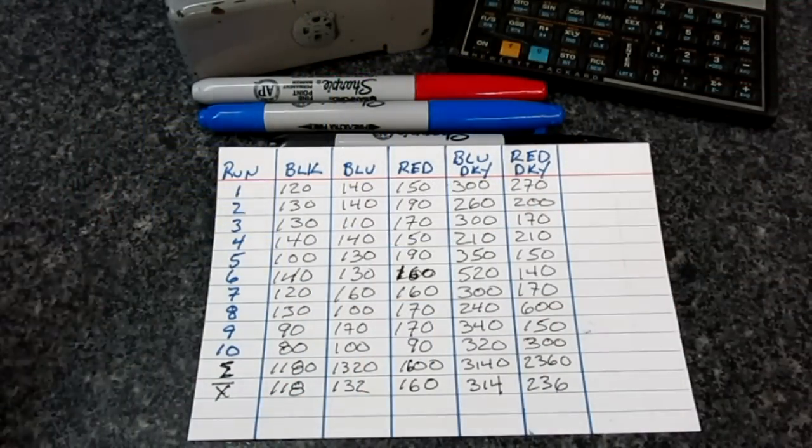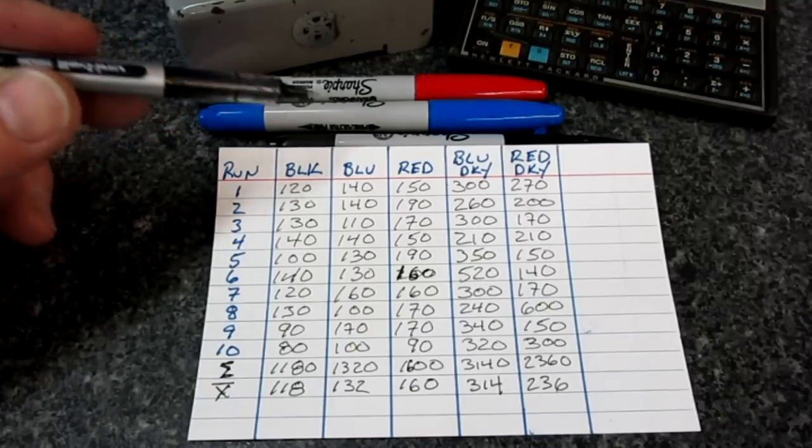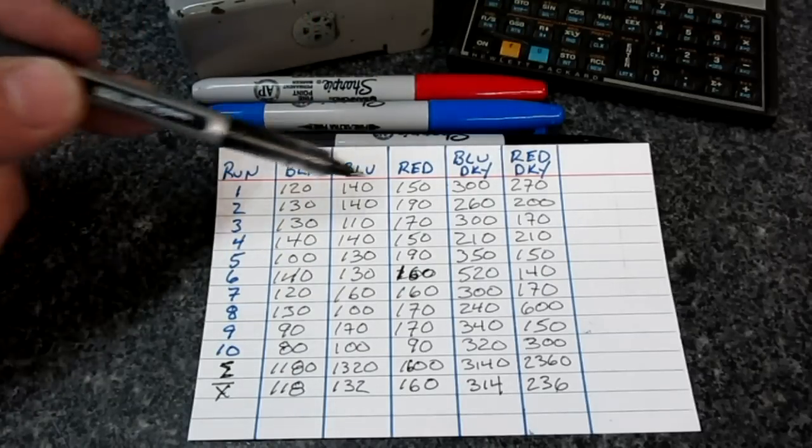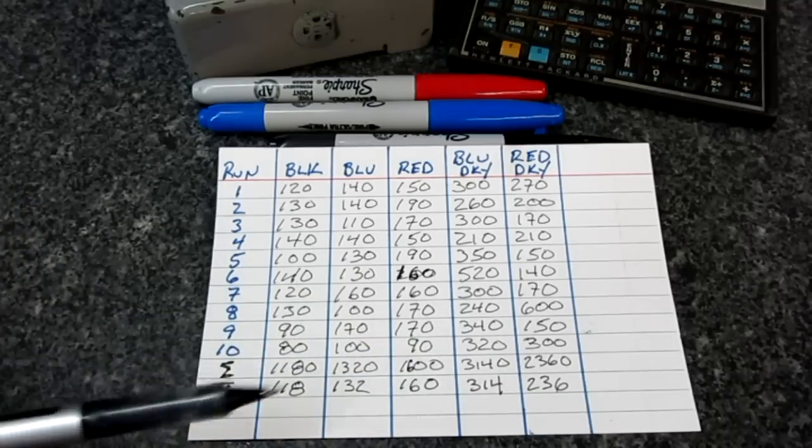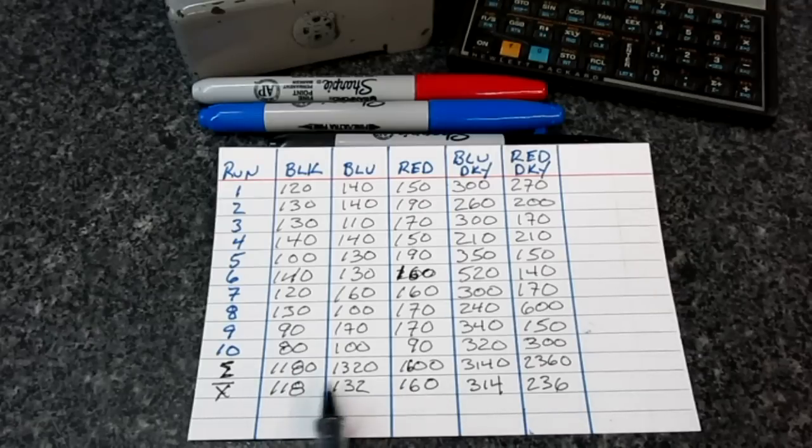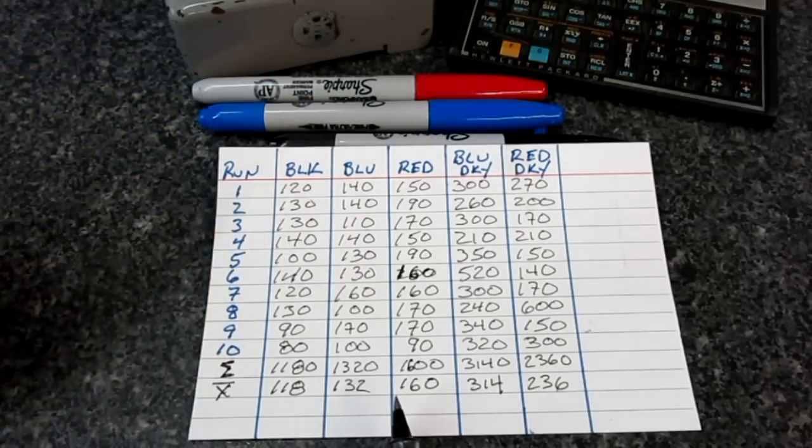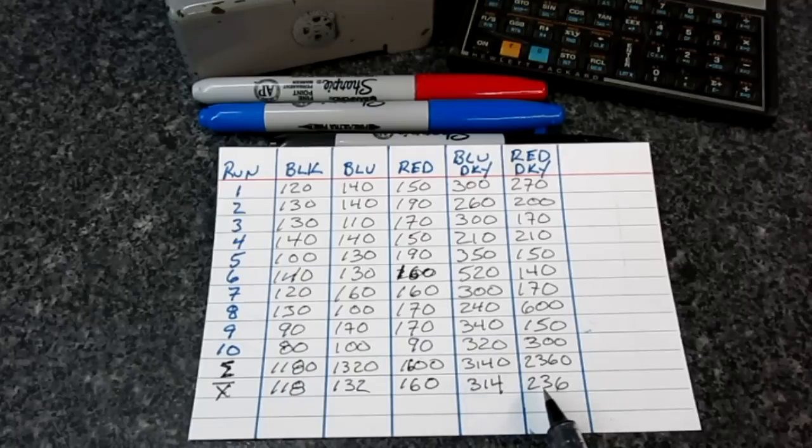So here's the results of the testing. What I did was I did 10 runs of each particular flavor. We got black, blue, red, and then here's the Dikem, blue Dikem and red Dikem. And those are the readings that I got taking the measurements. Now, then I summed them and then averaged all the readings. So it's kind of interesting. The Sharpies are all kind of in a similar range here. This is 118 millionths, 132 millionths, 160 millionths. So all these readings are in millionths of an inch. And then here's the Dikem, 300, that's three-tenths thick, and 2.3 tenths or 236 millionths of an inch thick.